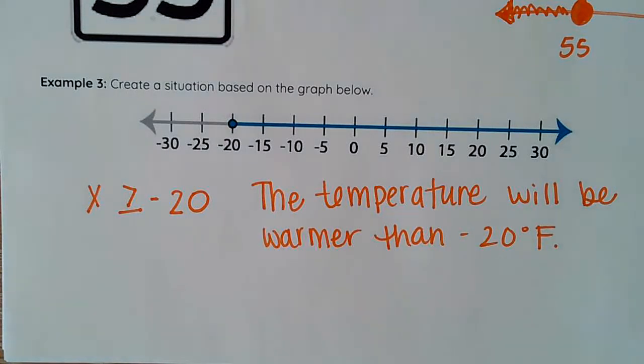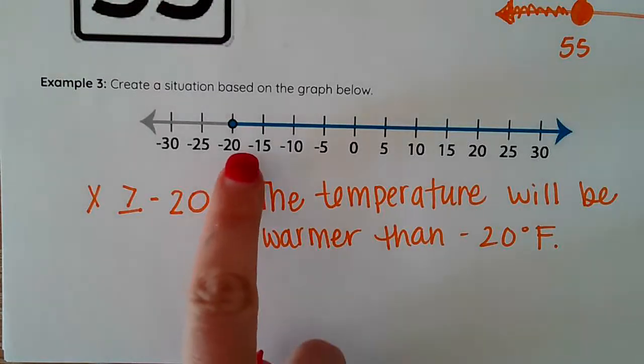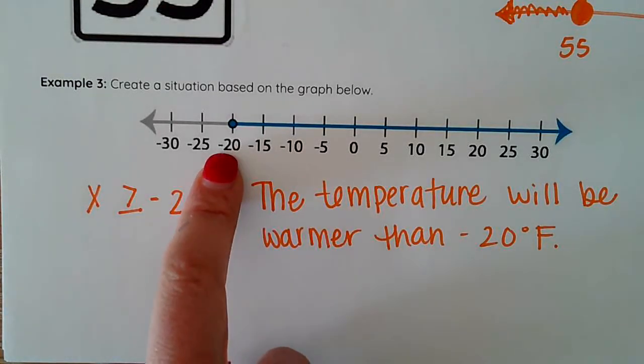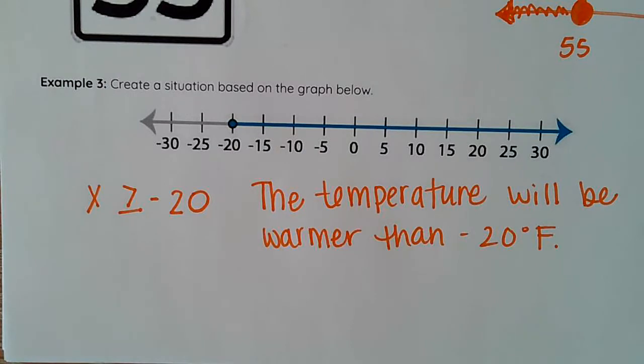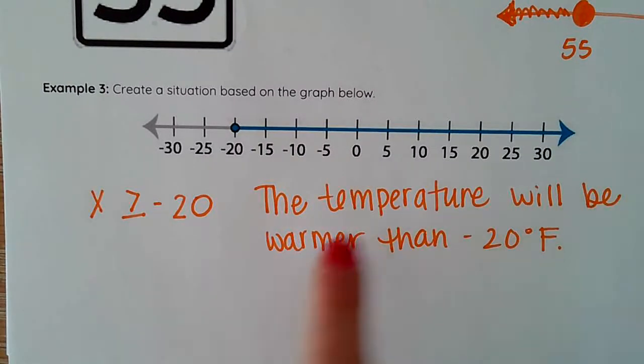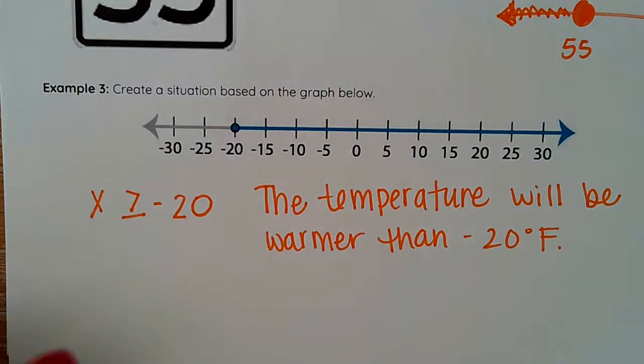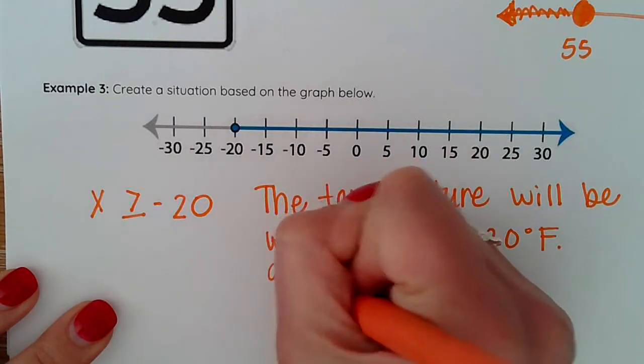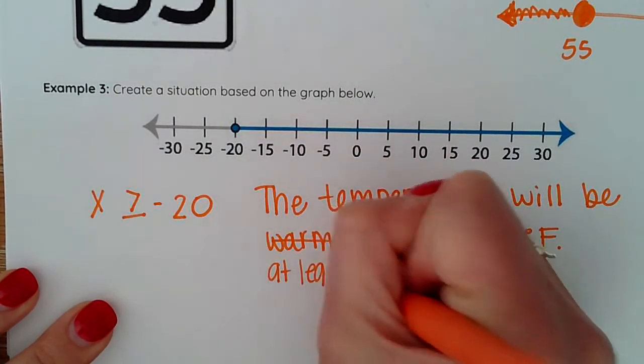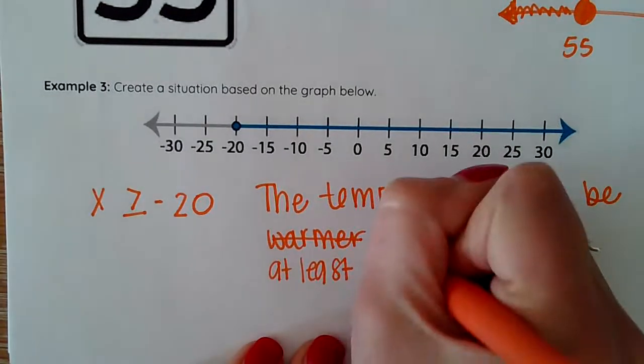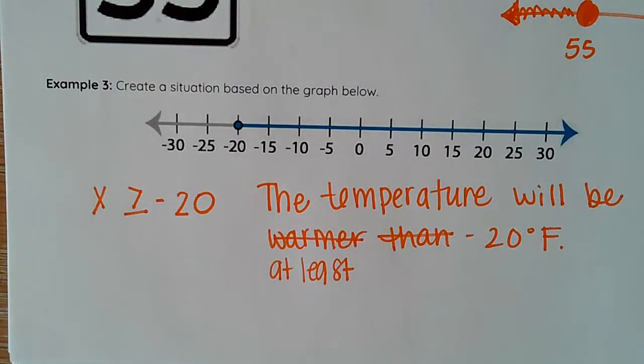So in that situation I am told that negative 20 is my starting point. Now also actually if I say warmer I might want to say warmer or equal to so I could actually say at least negative 20 degrees Fahrenheit would actually make a little bit more sense. The temperature will be at least negative 20 degrees Fahrenheit. That would mean that my x is let x be the temperature.